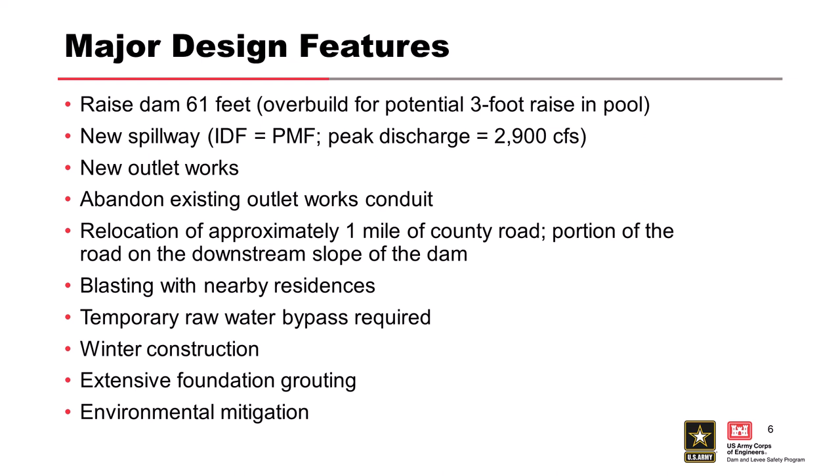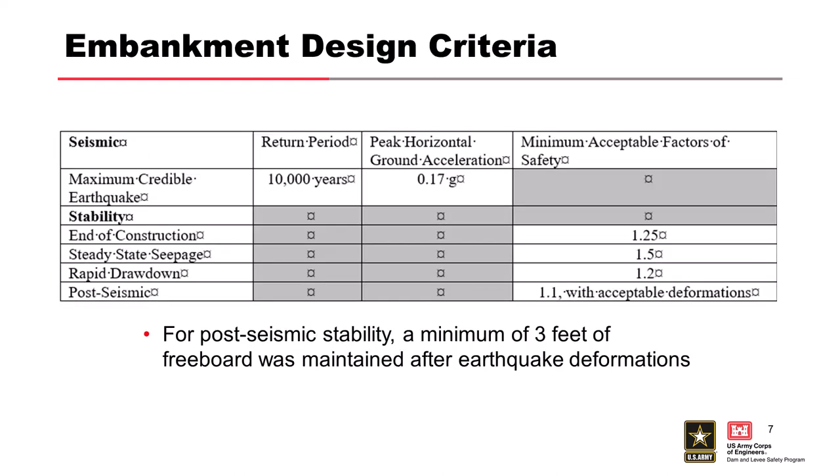Major design features included raising the dam 61 feet, constructing a new spillway and outlet works, abandoning the existing outlet in place, and placing a filter on the downstream side. The county road had to be relocated by a mile. A temporary water bypass pipe was installed because a water treatment plant immediately downstream still needed water during construction. There were winter construction requirements in the specifications.